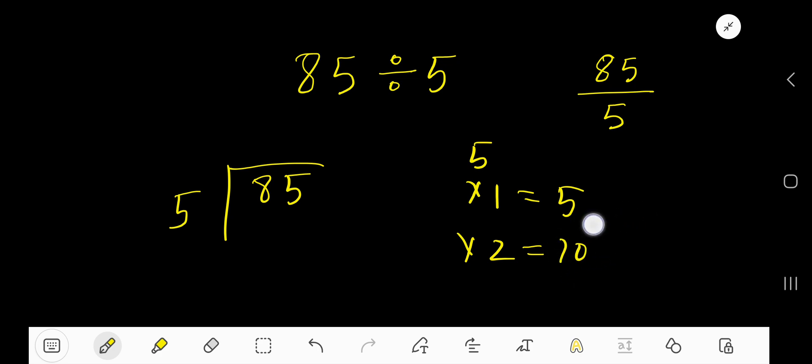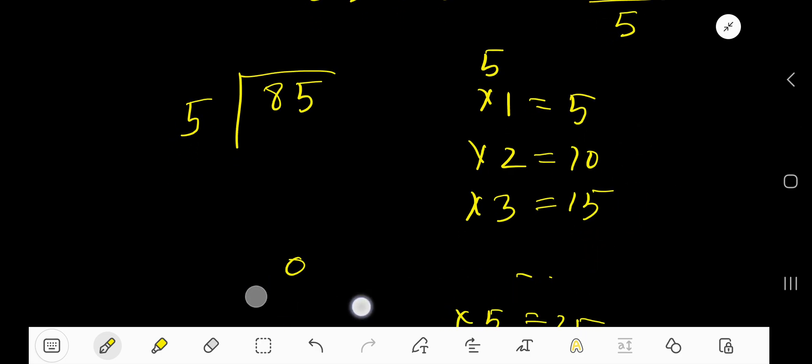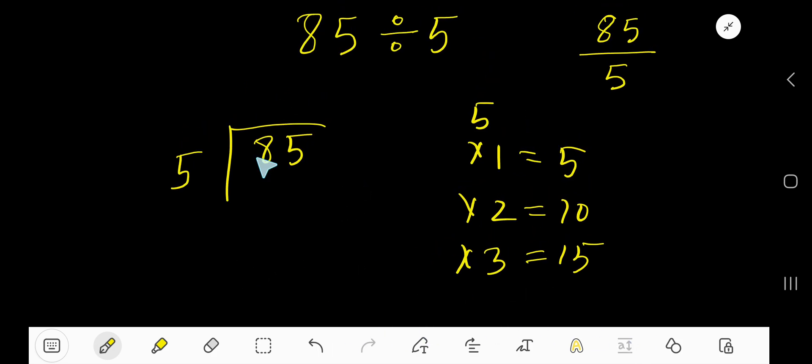...with this 5, that is 10. 5 times 3, just add 5 with this 5, then 15. Let's stop here.